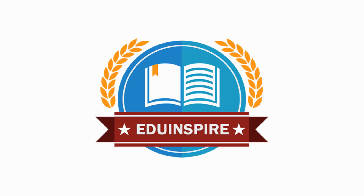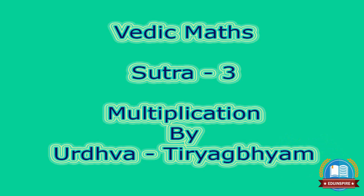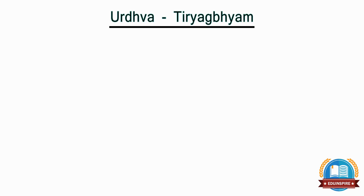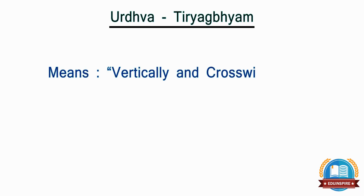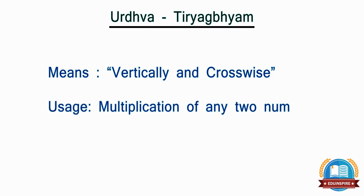Hello, welcome to Edoinspire channel. Today we will talk about the multiplication of two numbers using the third sutra of Vedic Maths, i.e. Urdhva Tiryak Bhyam. The meaning of this sutra is vertically and crosswise. This formula can be very effectively applied while multiplying any two numbers. Let's go through different examples to understand how it works.